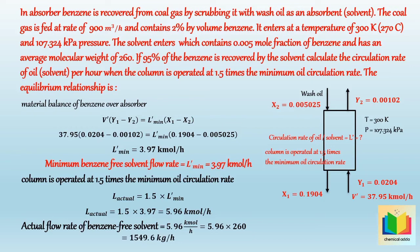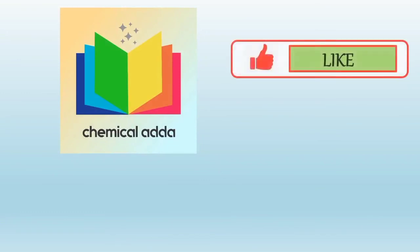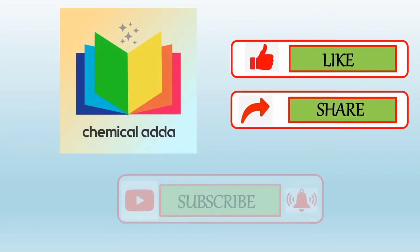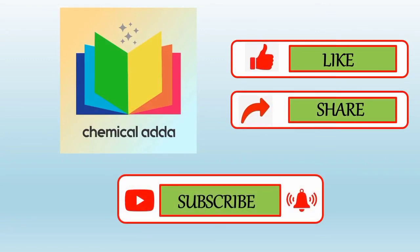That's all about the problem based on an absorption column, in which we discussed how to calculate the actual flow rate of solute-free solvent when the minimum solute-free solvent flow rate is given. In the next video, we will discuss other problems based on this. If you like my video, please like and share this video with your friends, and subscribe to my YouTube channel. See you next time. Bye bye.